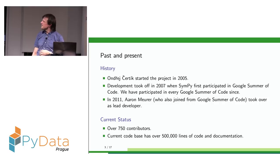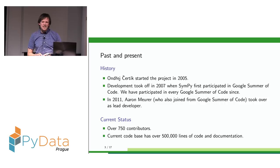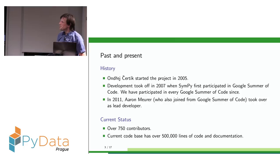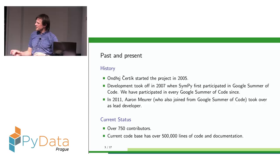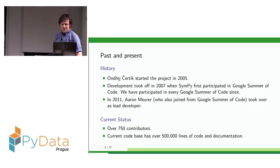I started working on SymPy in 2008, and in recent years I'm not very active in SymPy development, but I'm trying to stay up to speed with the current status. Currently, SymPy has accumulated contributions from more than 750 people, and the current code base has more than 500,000 lines. So it has become a really big project.